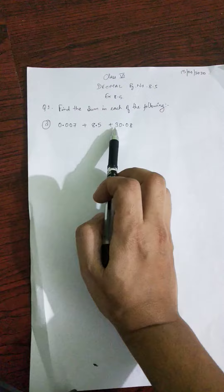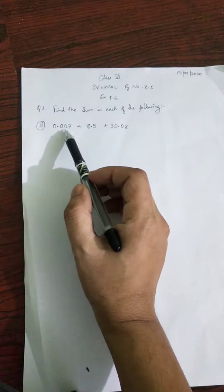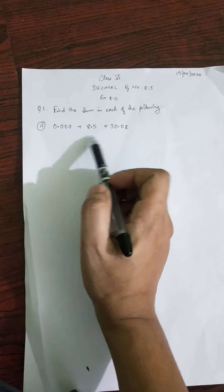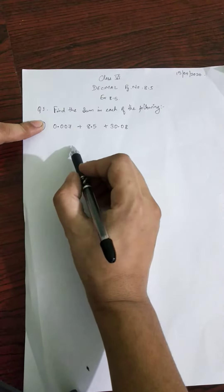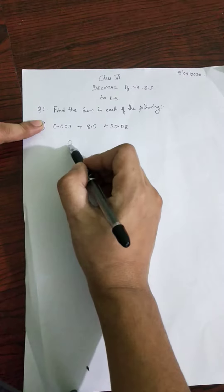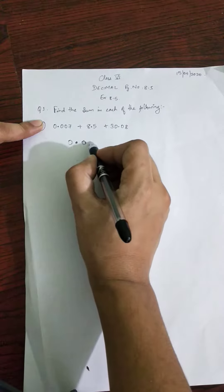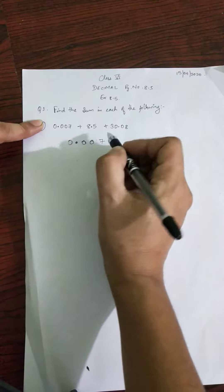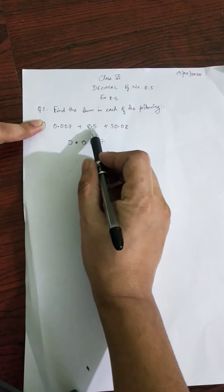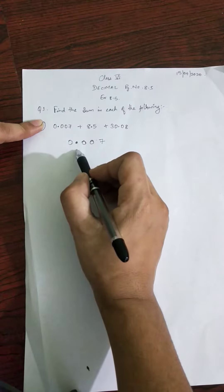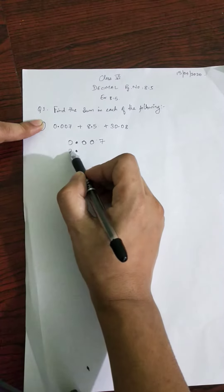When we add decimal numbers, we need to align them properly. Let us write the numbers: zero point zero zero seven, then eight point five. I'll write eight point five. See the decimal point? Eight point five. Then we need to see that the decimal points are aligned.